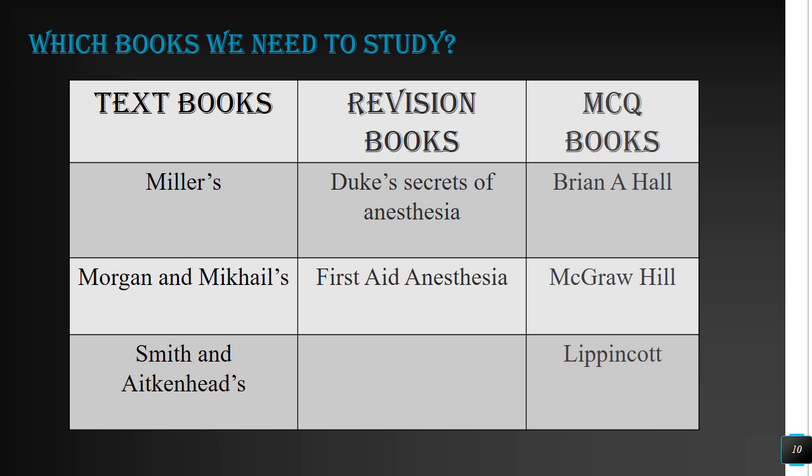The main textbook for every anesthesiologist is Miller's Anesthesia. Morgan and Mikael is a good book but it is short and does not cover all the basic and detailed aspects of anesthesia we need as a consultant. Miller is the one book everyone should read at least once while working in anesthesiology. If you have no time for Miller's, prefer Morgan or Smith.